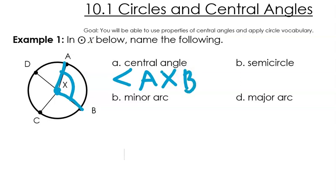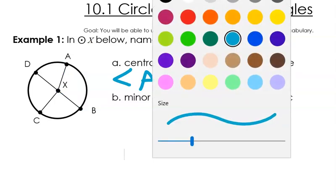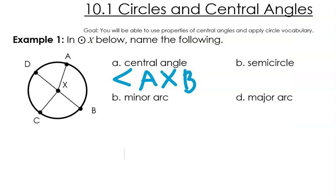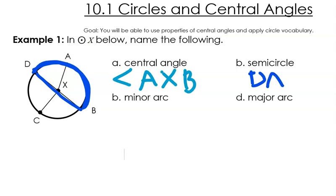Now let's talk about a semicircle. A semicircle is going to go halfway around the circle. Here is a diameter in this picture. So halfway around the circle is here — the semicircle is the piece of the arc out here. So this is going to be D towards A and towards B, because I just outlined that half, and then I put that arc notation on top, connecting them like that.